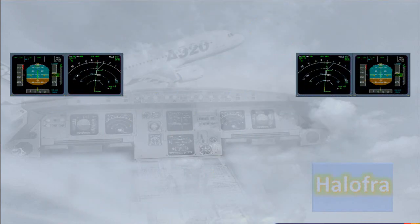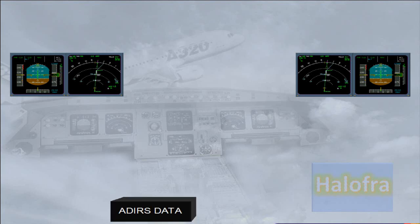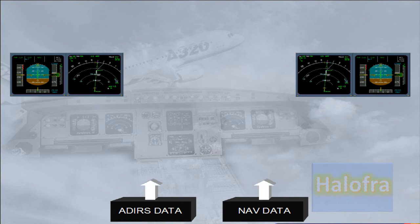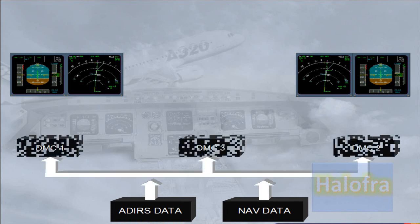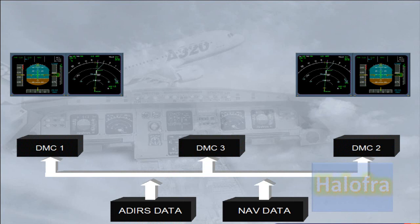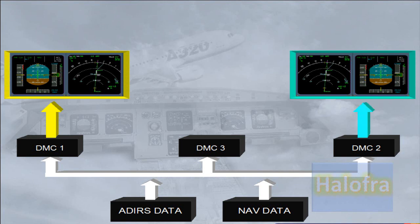Now let's go back to the EFIS system. For the EFIS displays, data from the Air Data and Inertial Reference System, ADIRS, plus navigation data from the Flight Management and Guidance System, FMGS, is fed directly to three Display Management Computers, DMC. The three identical DMCs process the data and generate the images to be displayed. In normal operation, DMC-1 supplies EFIS information to the Captain's PFD and ND, DMC-2 supplies the First Officer's PFD and ND, and DMC-3 is available as a backup. You will see the use of DMC-3 in the abnormal operation module.